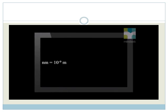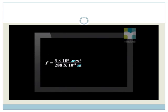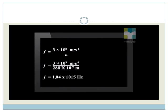Nano means times 10 to the power minus 9. So 288 nanometers is 288 times 10 to the power minus 9 meters. We substitute for the wavelength of this light. Notice that the unit meters cancels and we are left with seconds to the minus 1, which is the same as per second or hertz. This is the unit of frequency. So this light has a frequency of 1.04 times 10 to the power 15 hertz.